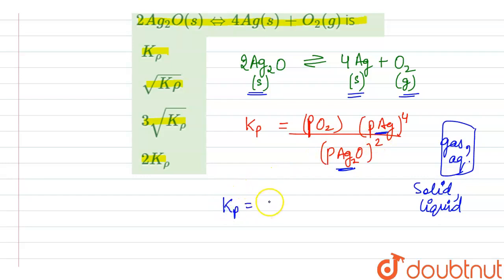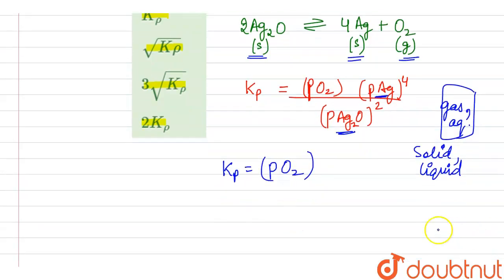From here we can calculate the partial pressure of oxygen. Oxygen partial pressure equals Kp only. The partial pressure of oxygen is equal to Kp. From this, the first option is the correct option.